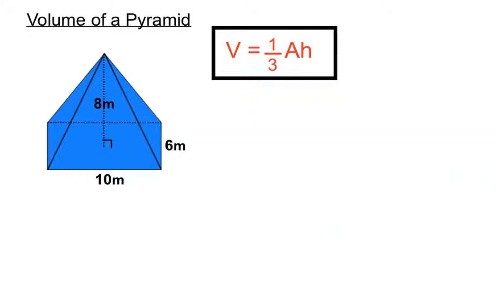That's where the perpendicular height is measured. So in an example here, we've got a base of 10 by 6 meters and a perpendicular height of 8 meters. Let's piece together the volume of a pyramid here.